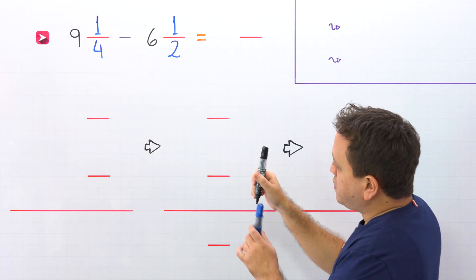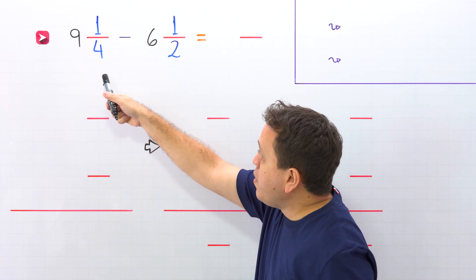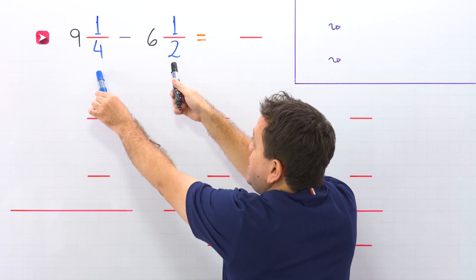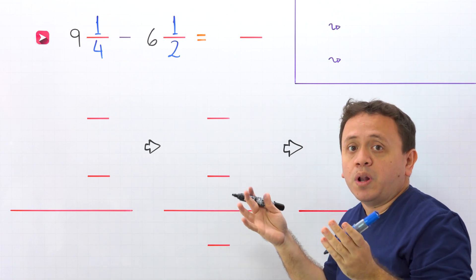Are you ready for the example? In this example, we need to subtract 9 and 1 fourth minus 6 and 1 half. These two mixed numbers have different denominators. This time, we will work vertically.